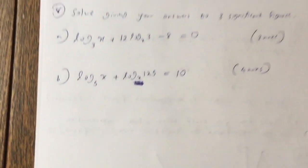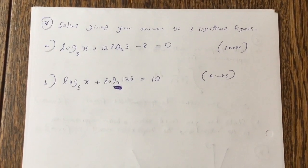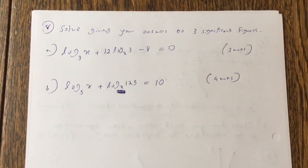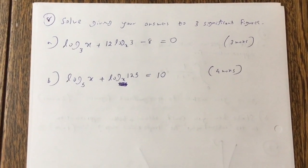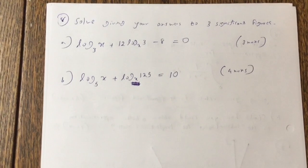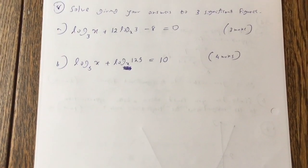So that leaves us with the last question. Question 8. Given your answer to 3 significant figures. Log base 3 of x plus 12 log base x of 3 minus 8 equals 0. Log base 5 of x plus log base x of 125 equals 10.